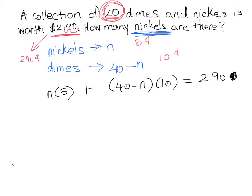Now that we have that, we can solve this algebraically. So five times n, or n times five as we now have it, is really 5n plus, and we can go ahead and distribute this 10. As you may know, it doesn't matter if the 10 is sitting in front or behind, it's the same thing. So when we distribute that 10 we get 400 minus 10n is equal to 290.